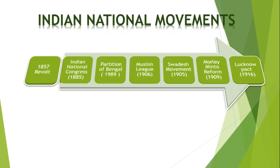Partition of Bengal, 1905. Lord Curzon was made the new Viceroy of India in 1899. The Partition of Bengal came into effect on October 16, 1905. That reduced the old province of Bengal in size by creating a new province of East Bengal, which later on was called East Pakistan and is present-day Bangladesh.